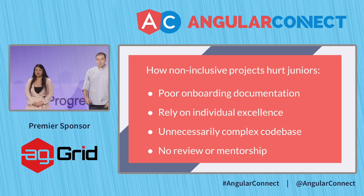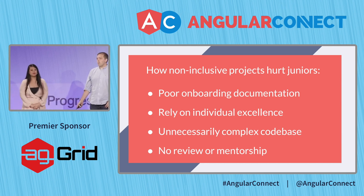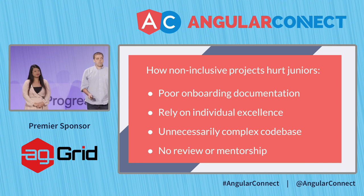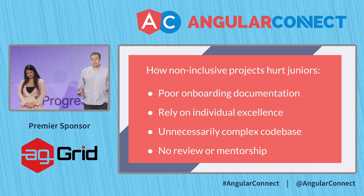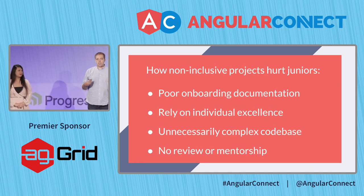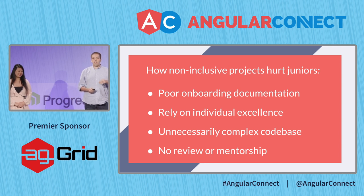Here are some examples of things that our teams do that actually hurt juniors. We have poor onboarding documentation. Juniors would love to answer their own questions, but if there's no documentation, they're forced to ask questions about everything. This makes them feel like they don't belong and makes others feel bothered. Or these teams rely on individual excellence — seniors have to micromanage juniors because the team was structured so nobody was allowed to make mistakes in the first place.